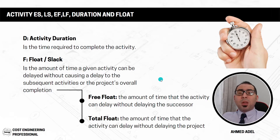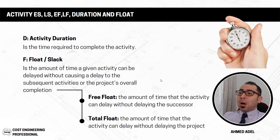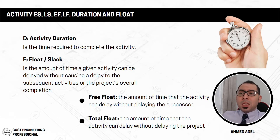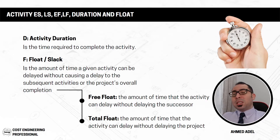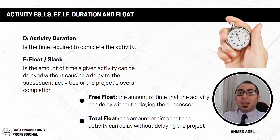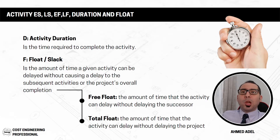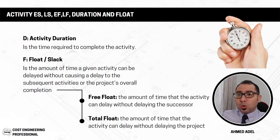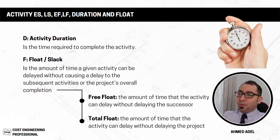There are two types of float. Free float is the amount of time an activity can be delayed without delaying its successor — the next activity. For example, if an activity has two days of free float, it can be delayed by two days and the next activity will still start on time.